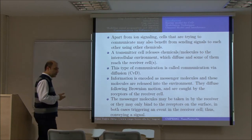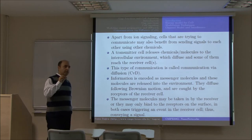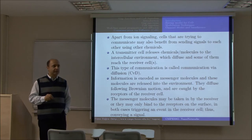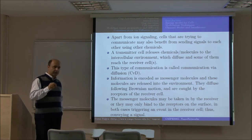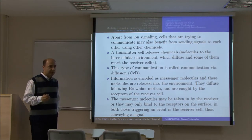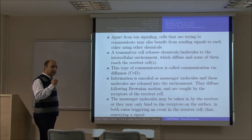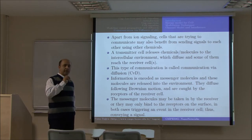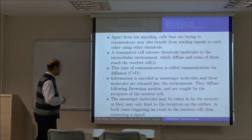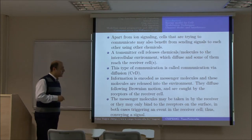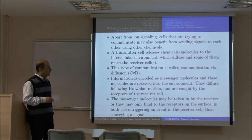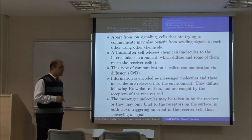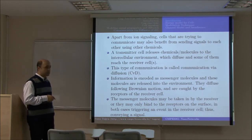Remember, molecular communication typically works with the release of many molecules from one point — from the center cell — towards the destination cell. One method was passing molecules through gap junctions. Now we are talking about releasing molecules not through a gap junction, but through the extracellular environment, so that these molecules diffuse towards the destination. A transmitter cell releases these molecules, and hopefully they diffuse towards and are received by the destination. This type of communication is called communication via diffusion — we will use the shorthand CVD.